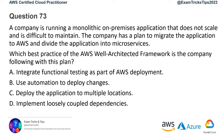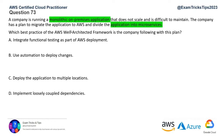Question number 73. A company is running a monolithic on-premises application that does not scale and is difficult to maintain. The company plans to migrate the application to AWS and divide it into microservices. Which best practice of the AWS Well-Architected Framework is the company following? Key keywords here: monolithic application, on-premises, not easy to scale or maintain because it's a single piece of code requiring vertical scaling. The company wants to convert this application into microservices before migration.